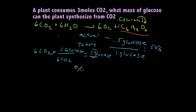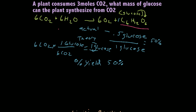In reality, percent yields aren't usually that high — chemists in the lab aren't always perfectly accurate. If you get 100%, you've probably done the problem wrong. If you get greater than 100%, you've definitely done it wrong — most likely you've flipped actual and theoretical. Remember: percent yield is actual over theoretical, or A over T. That's all there is to limiting reactants, theoretical yield, actual yield, and percent yield. Thanks for watching.